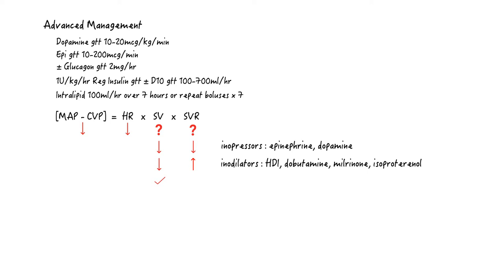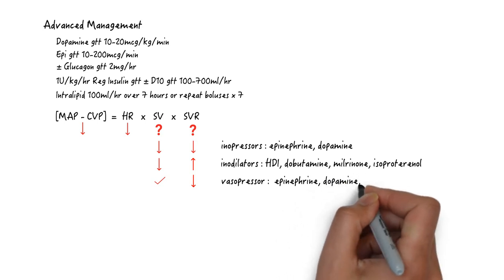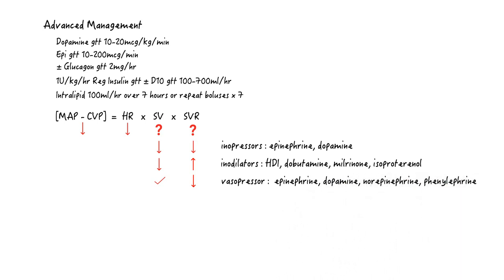The third scenario is that the stroke volume is okay, but the SVR is very low. Potent vasopressors include epinephrine, dopamine, norepinephrine, and phenylephrine.